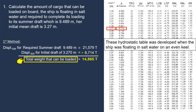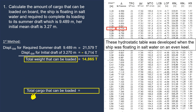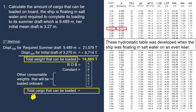To find the total cargo that can be loaded, we need to subtract our ROB, constant, and other consumable weights that will be loaded on board, such as fuel, fresh water, and ballast water. This will be discussed in detail in the next example of this video.